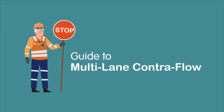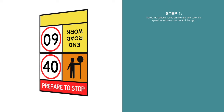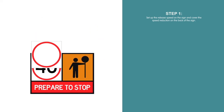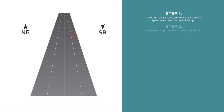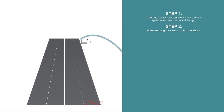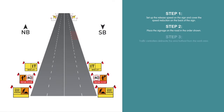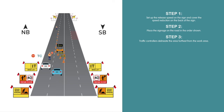Multi-lane contraflow applies the principle to two or more lanes of traffic heading in each direction. Step 1: Set up the release speed on the sign and cover the speed reduction on the back of the sign. Step 2: Place the signage on the road in the order shown. Step 3: Traffic controllers delineate the lane furthest from the work area — in this example, it's the northbound lane.